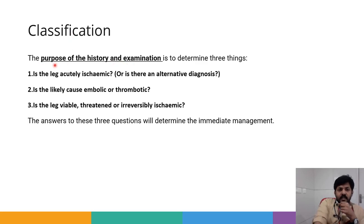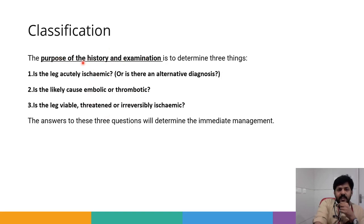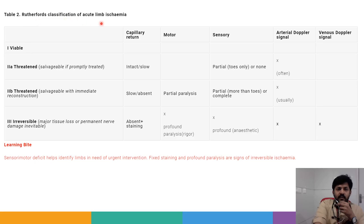The purpose of history and examination is to determine three things: Is the leg acutely ischemic or is there an alternative diagnosis? Is the likely cause embolic or thrombotic? Is the leg viable, threatened, or irreversibly ischemic? The answers determine immediate management. This is Rutherford's classification of acute limb ischemia, divided into class 1, 2A, 2B, and 3.